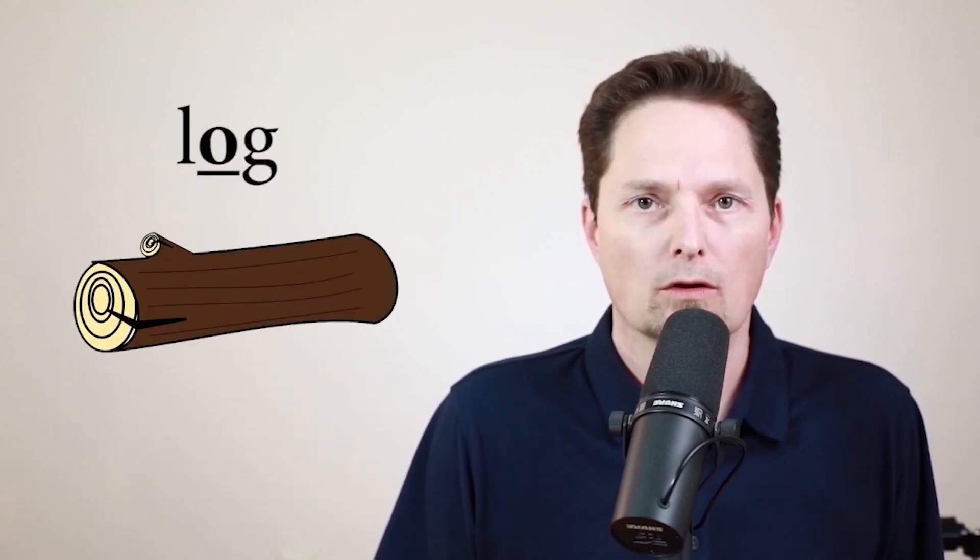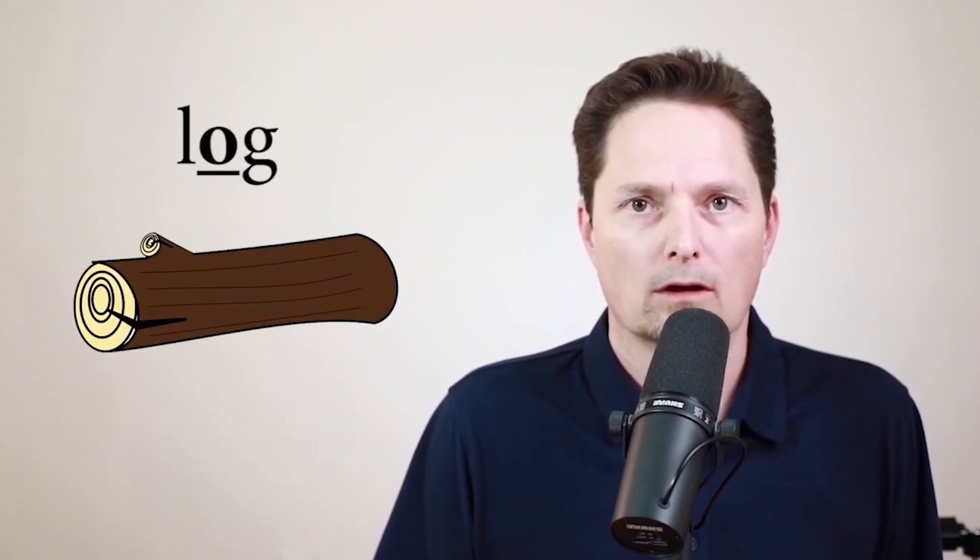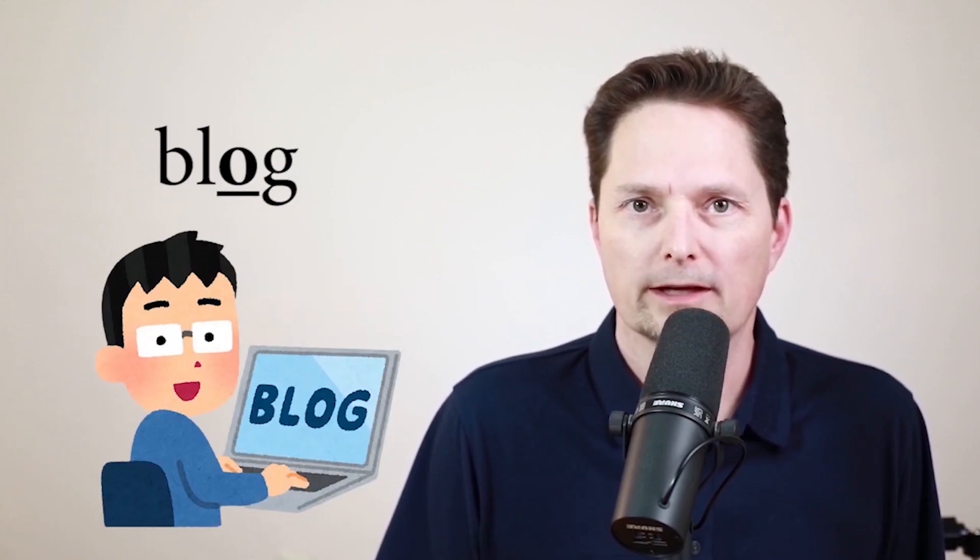Let's look at some other examples. Frog — the O is before the G, so it's not "frahg," it's frog. And this word: log. This is a log. And this word: blog. He's writing a blog for the internet. He's blogging — not "blahgging," but blogging.